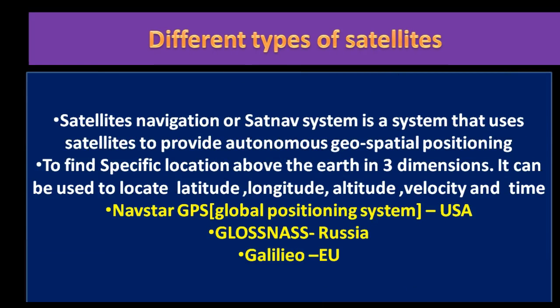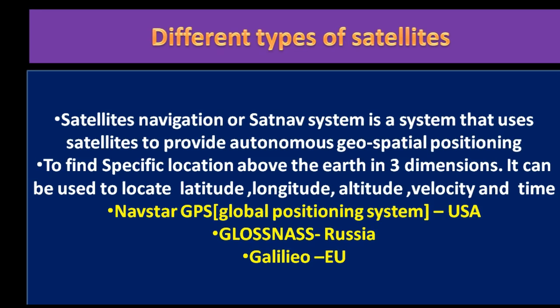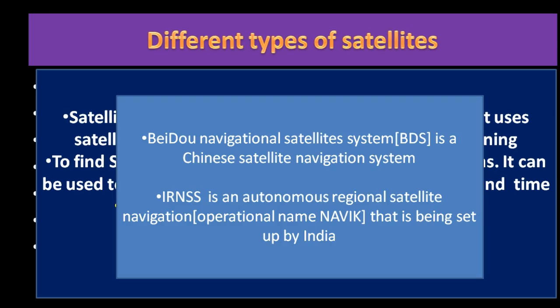Satellite navigation, or SATNAV, is a system that uses satellites to provide autonomous geospatial positioning, used to locate latitude, longitude, altitude, velocity, and time. GPS (Global Positioning System), originally NAVSTAR GPS, is a US-based radio navigation system. GLONASS is a space-based navigation system by Russia. Galileo is a global navigation satellite system created by the European Union. BDS (BeiDou Navigation Satellite System) is a Chinese satellite navigation system. IRNSS is an autonomous regional satellite navigation system with operation named NavIC, being set up by India.